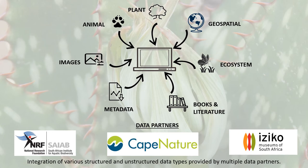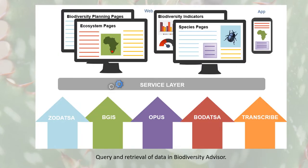These data are aggregated from multiple diverse data partners across South Africa. Users will be able to navigate to different views or interfaces from the home page depending on their needs. Available views include ecosystem and species pages, biodiversity planning pages providing access to existing spatial biodiversity planning products, and a biodiversity indicators view which hosts biodiversity monitoring data and indicators that measure the condition of biodiversity and progress towards biodiversity targets.